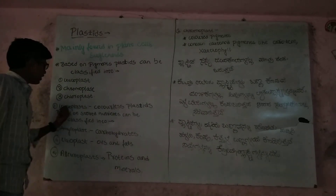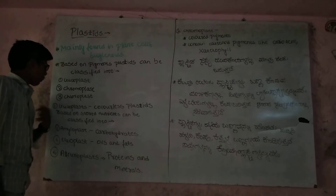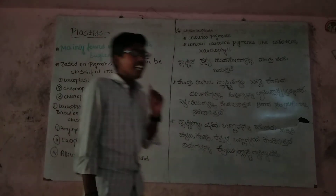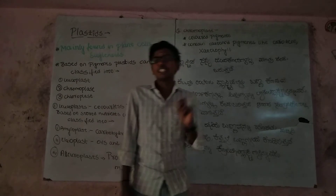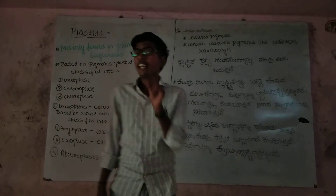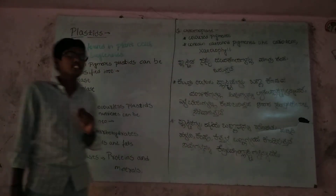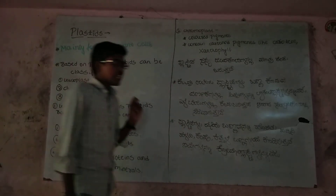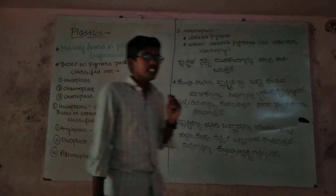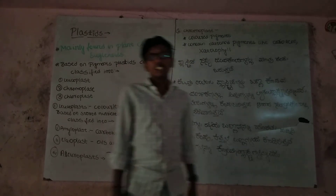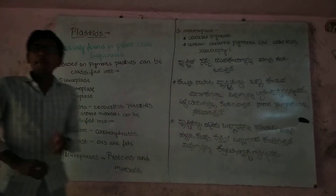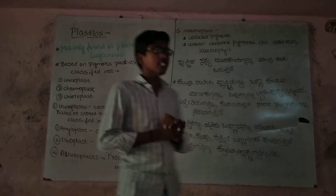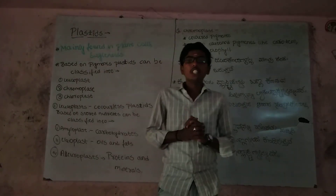First, we will discuss Leucoplast. Leucoplasts are colorless plastics. They are variable in size and store nutrients. Based on the nutrients stored, plastics can be differentiated into three types.